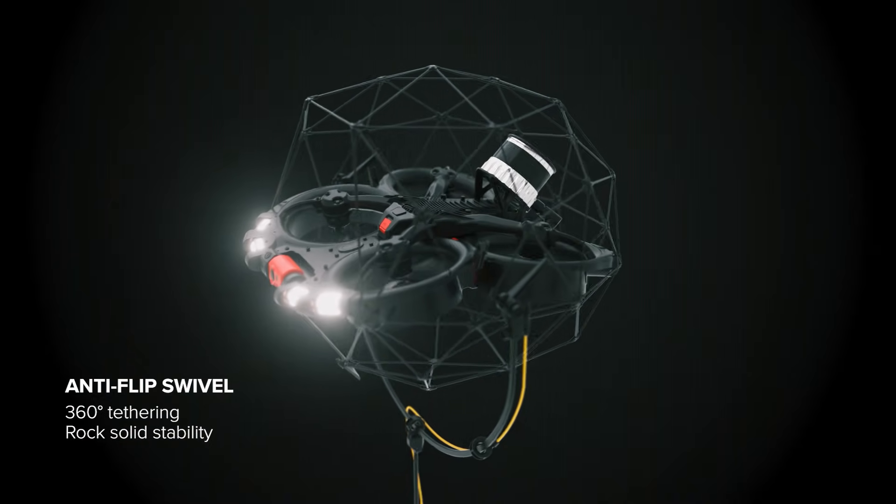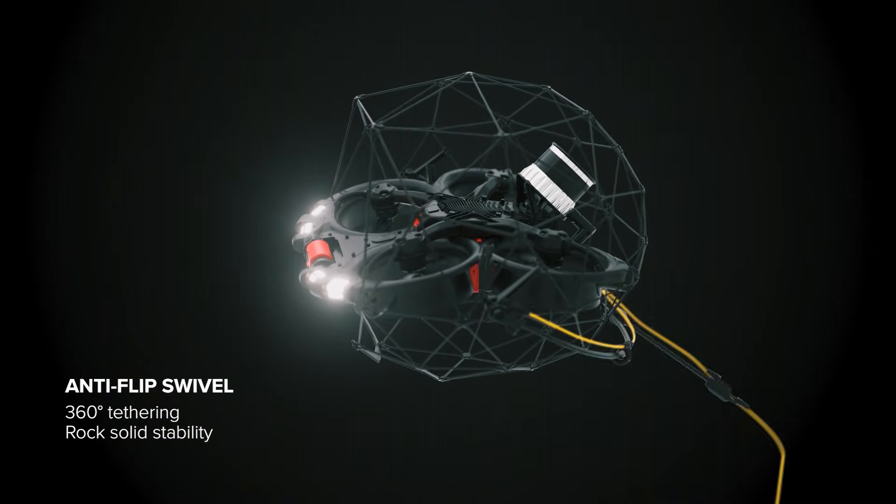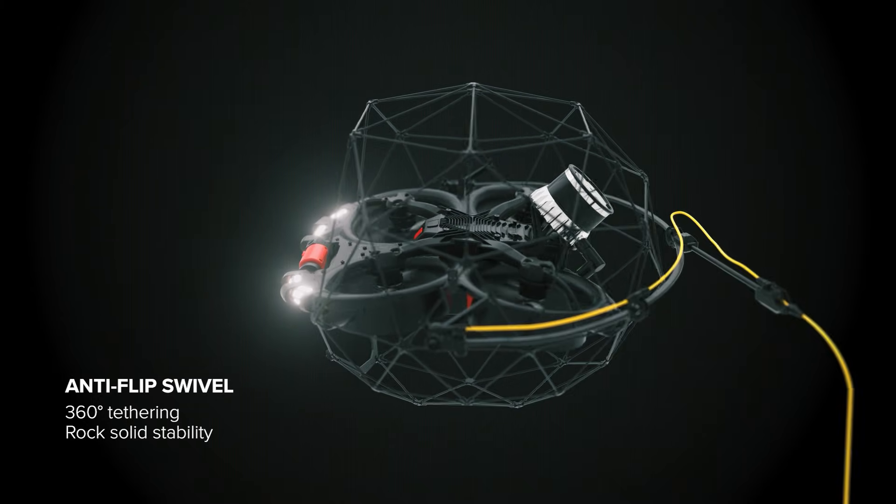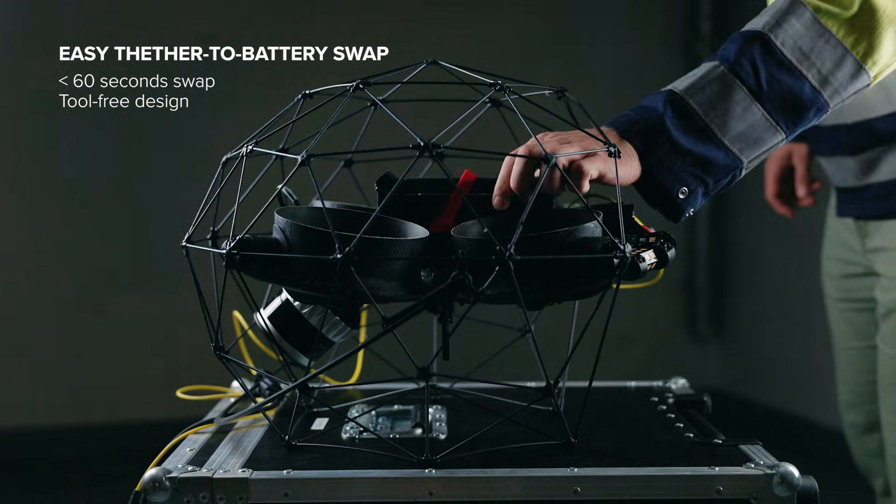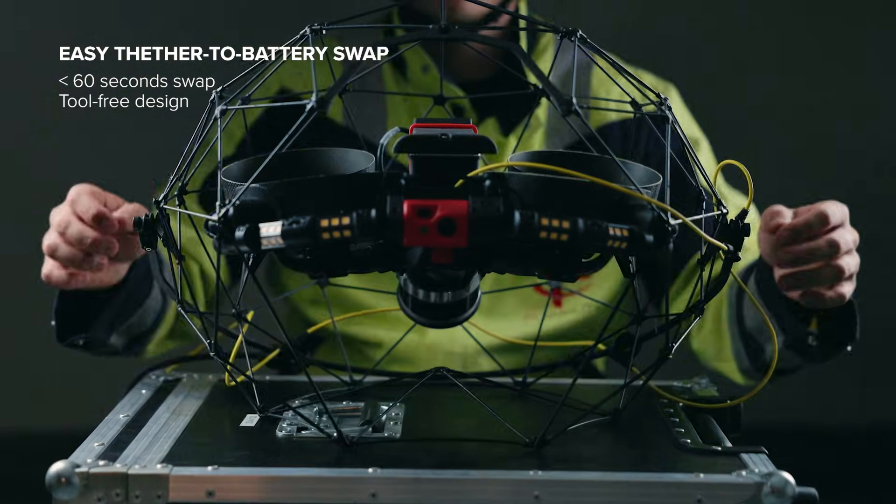The swivel rotates 360 degrees around the drone, eliminating disturbances to the drone even in the event of sharp maneuvers or cable snags, without compromising on the versatility of your Elios III drone.